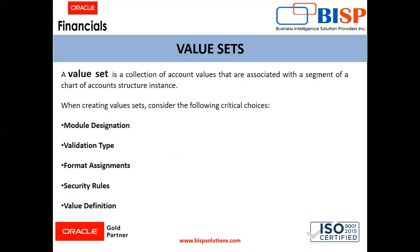When we create value sets we have to consider the following critical choices: the first one is module designation, then validation type, format assignments, security rules, and value definition. The module designation is used to tag value sets and to set the value sets apart during upgrades and other processes.